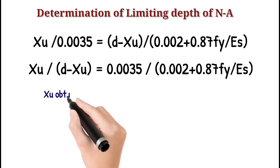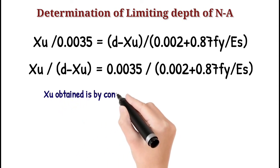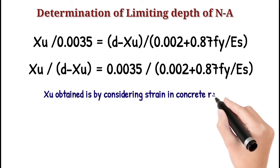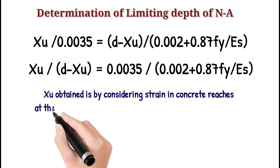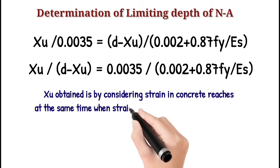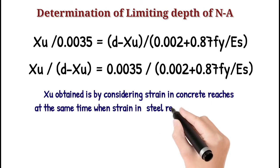This Xu is obtained by considering strain in concrete reaches at the same time when strain in steel reaches on tension side. This depth of neutral axis is termed as limiting depth of neutral axis or maximum depth of neutral axis.